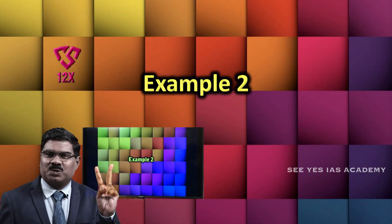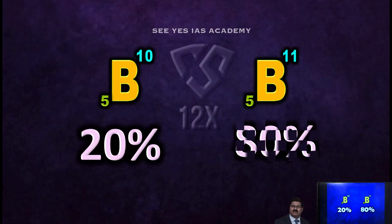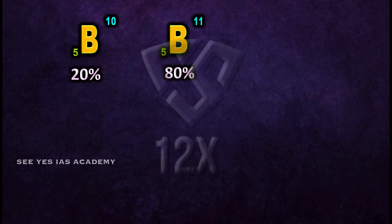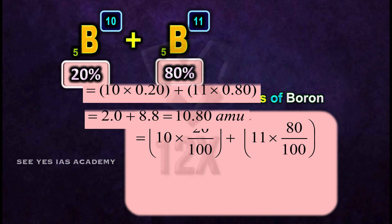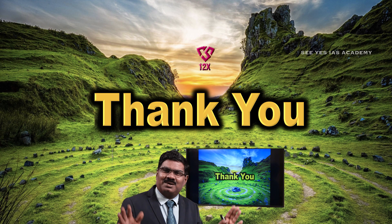Example No. 2: Boron naturally occurs as a mixture of boron-10 (5 protons and 5 neutrons) and boron-11 (5 protons and 6 neutrons). The percentage abundance of B-10 is 20% and that of B-11 is 80%. Therefore, the atomic mass of boron equals 10 × 20% + 11 × 80%, which equals 10.80 amu.